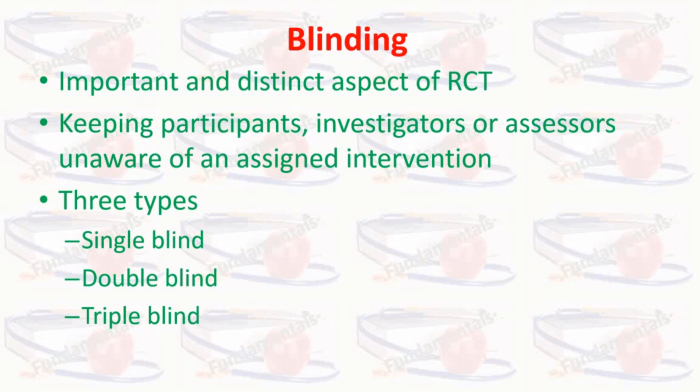Triple Blind: it goes one step further. All the participants, the doctor, and the statistician are unaware of the group allocation. Only the principal investigator is aware of the group allocation and the treatment allocation.